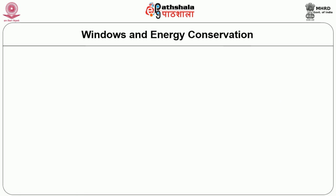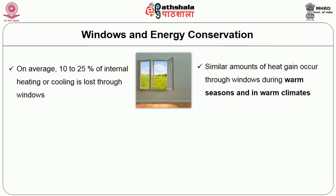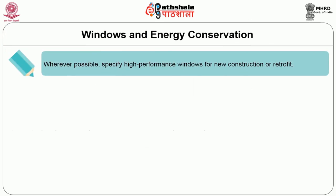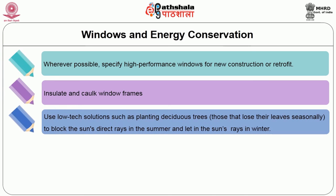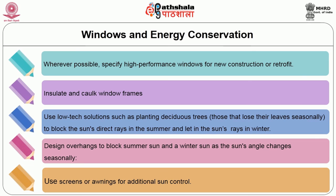Windows and energy conservation: On average, 10–25% of internal heating or cooling is lost through windows, and a similar amount of heat gain occurs through windows during warm seasons and in warm climates. Low-tech solutions and new high-performance window technologies can improve those statistics. Wherever possible, specify high-performance windows for new construction. Insulate and caulk window frames. Use low-tech solutions such as planting deciduous trees — those that lose their leaves seasonally — to block the sun directly in summer and let in sun rays in winter. Design overhangs to block summer sun; use screens or awnings for additional sun control.